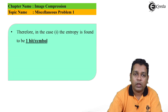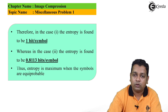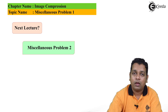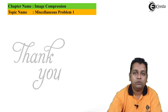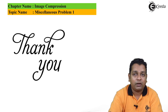Comparing the two cases: Case 1 gives entropy of 1 bit per symbol and Case 2 gives 0.8113 bits per symbol. Therefore, entropy is maximum when the symbols are equiprobable, proving Part D. All four parts of miscellaneous problem number 1 are now complete. By the next lecture we shall practice miscellaneous problem number 2 on image compression.